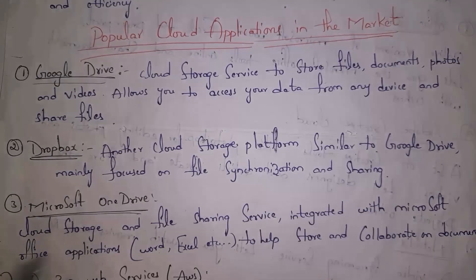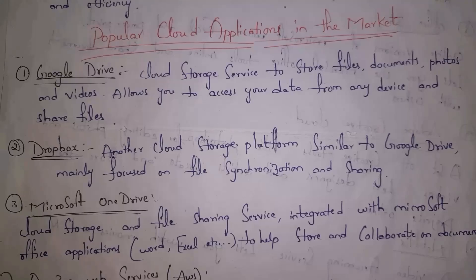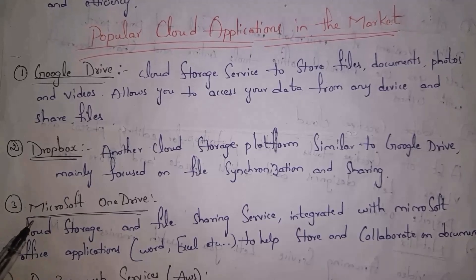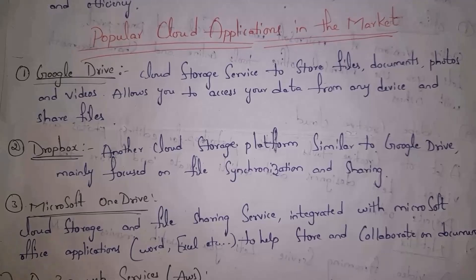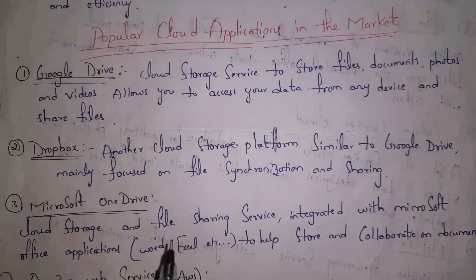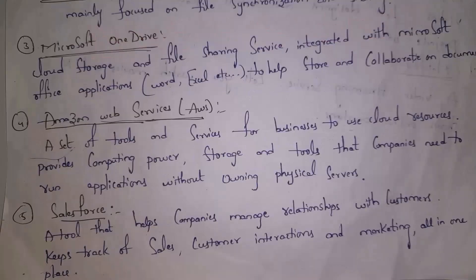The third one is Microsoft OneDrive, which is also a famous cloud storage where we can store various kinds of files and share them. Microsoft OneDrive is online storage connected to various Microsoft applications like MS Word and MS Excel. After creating an MS Office document, you can easily save it in Microsoft OneDrive, so many Microsoft applications are connected to OneDrive to save documents online.